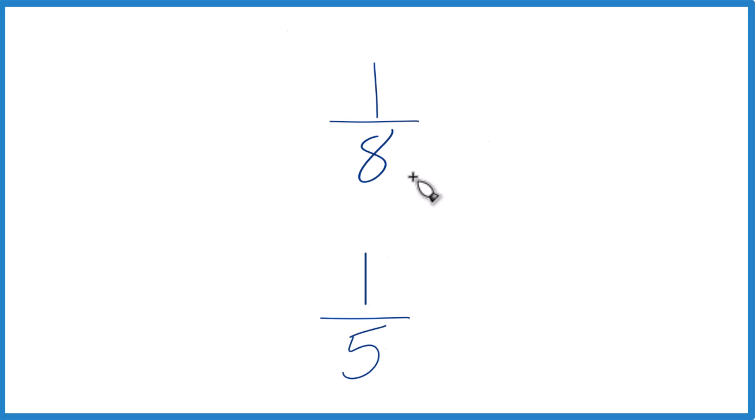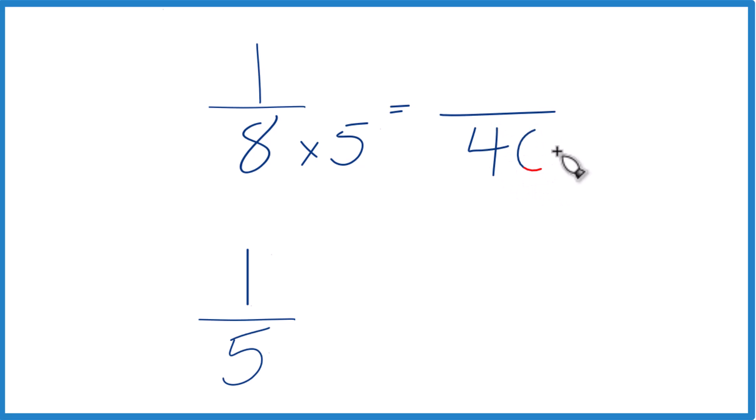Why don't we take 8 and multiply it by 5, like this. 8 times 5 equals 40. And down here, let's multiply 5 times 8, because 5 times 8 also equals 40. And now we have the same denominator.